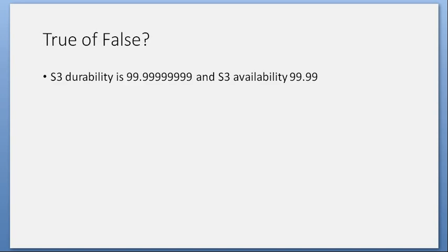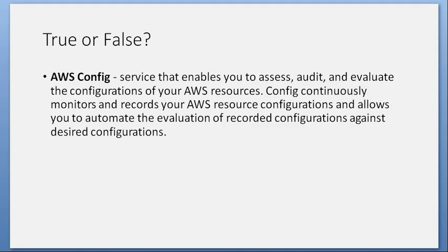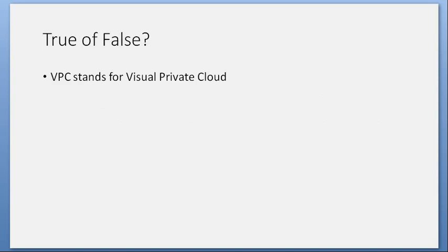True or false — S3 durability is 99.999999% and S3 availability is 99.9999%? True. True or false — AWS Config is a service that enables you to access, audit, and evaluate the configurations of your AWS resources; it continuously monitors and records your AWS resource configurations and allows you to automate the evaluation of recorded configurations against desired configurations. True. True or false — VPC stands for Visual Private Cloud? False. It stands for Virtual Private Cloud.